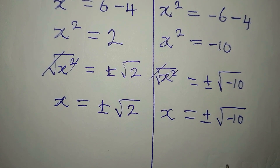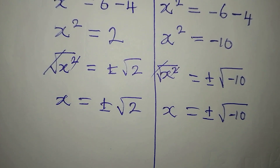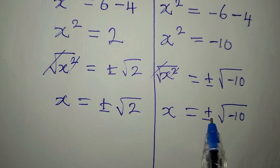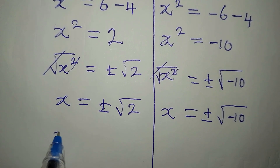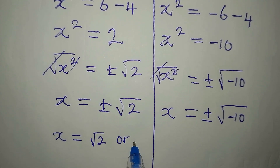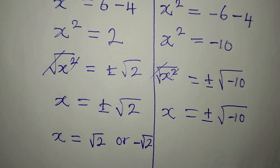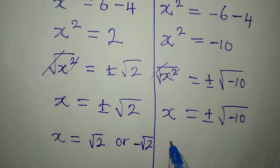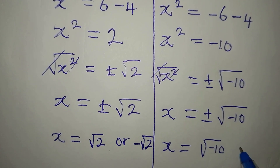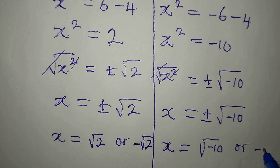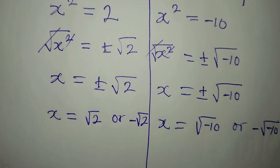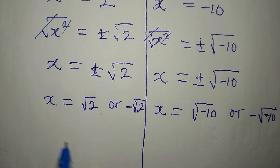Because we have a negative under the square root, this makes it impossible to evaluate directly, but since we want to bring out all the solutions, we will simplify. On the first side, x equals root 2 or negative root 2. On the second side, x equals root of negative 10 or negative root of negative 10.